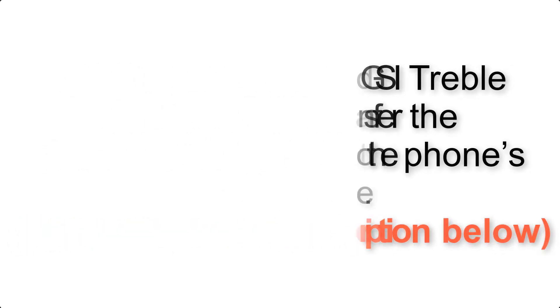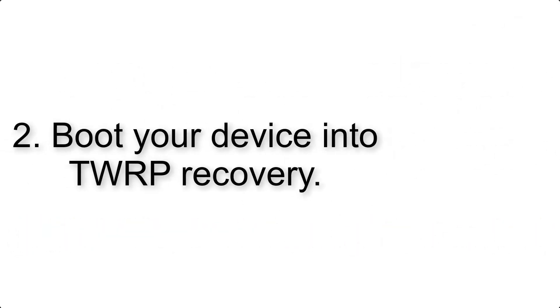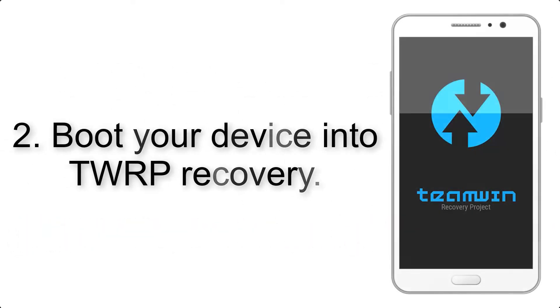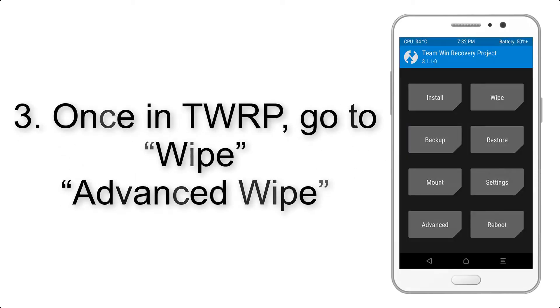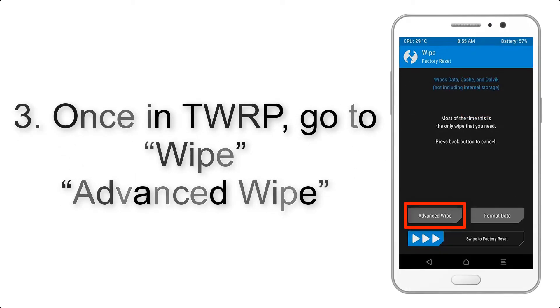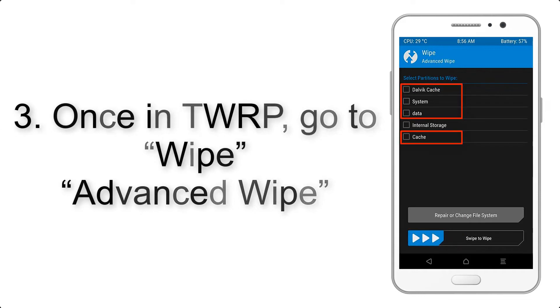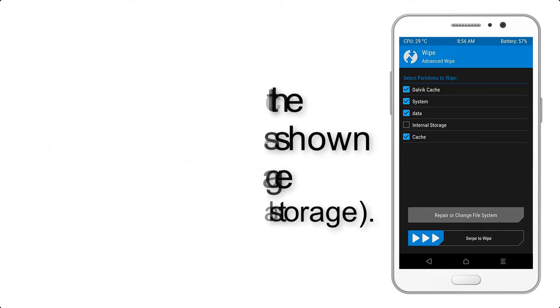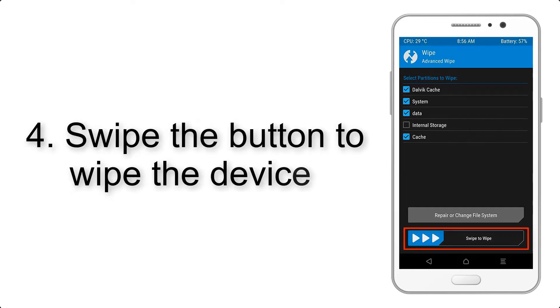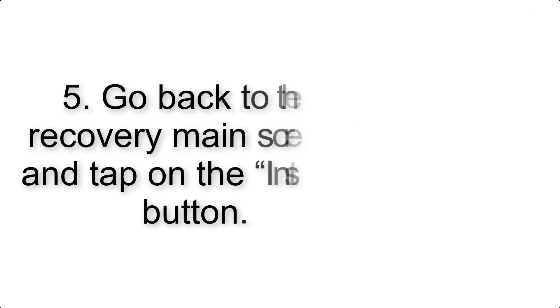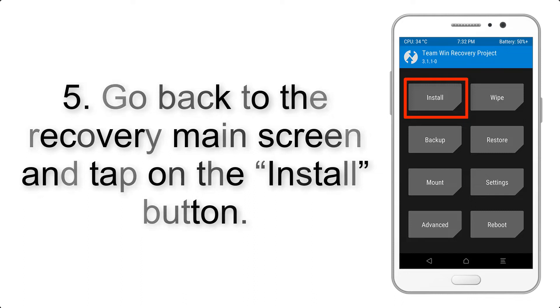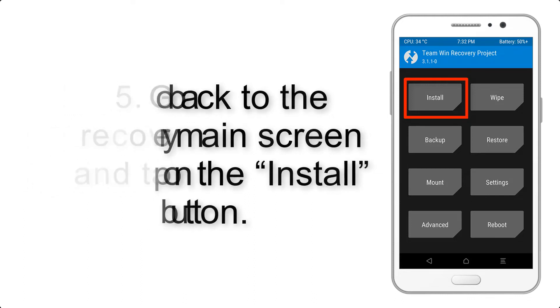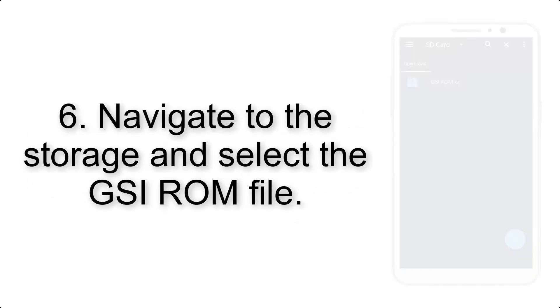Step 2: Boot your device into TWRP recovery. Once in TWRP, click on Wipe, then Advanced Wipe, and select the checkboxes as shown in the image, excluding internal storage. Step 4: Swipe the button to wipe the device. Step 5: Go back to the recovery main screen and tap on the Install button.